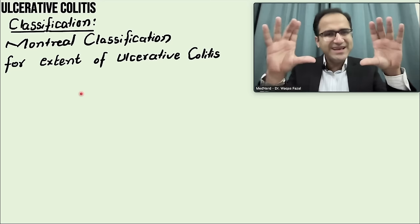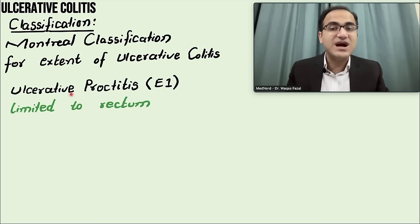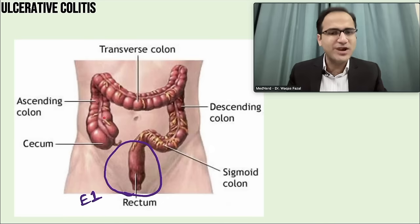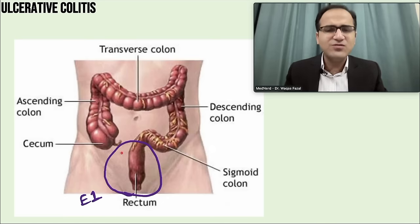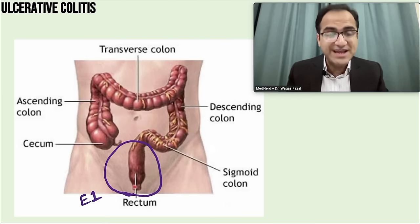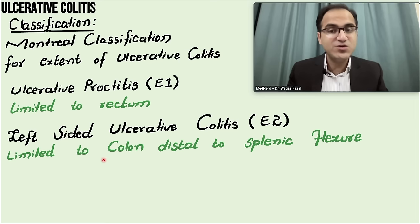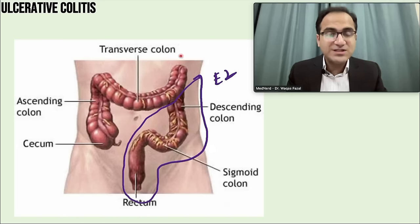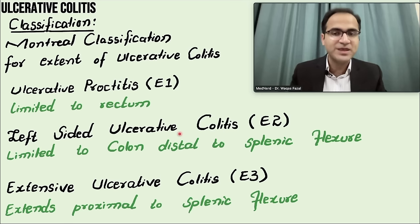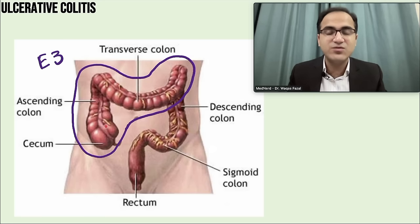Ulcerative colitis is classified based on the areas of the large intestine it involves. The Montreal classification categorizes it into E1 — ulcerative proctitis, limited to the rectum; E2 — left-sided ulcerative colitis, limited to colon distal to the splenic flexure; and E3 — extensive ulcerative colitis, extending proximal to the splenic flexure, where the whole intestine is involved.